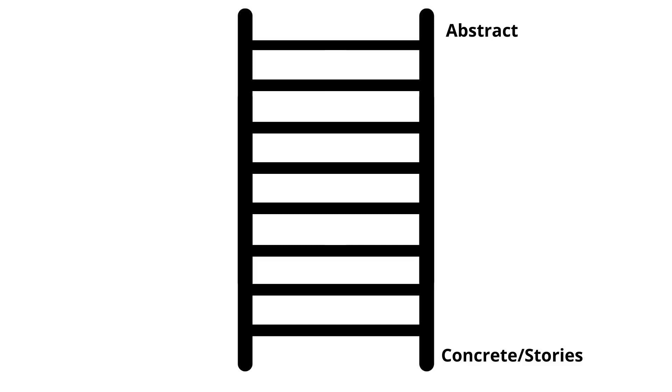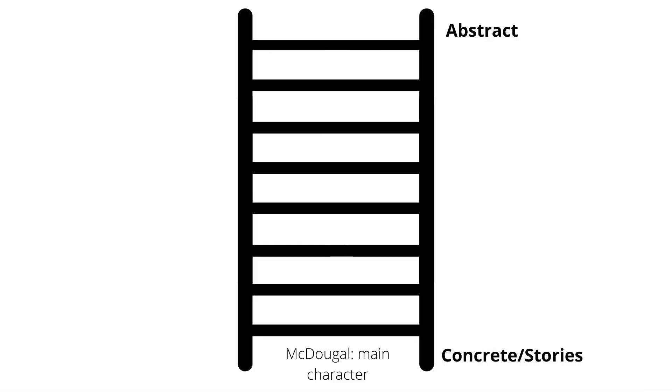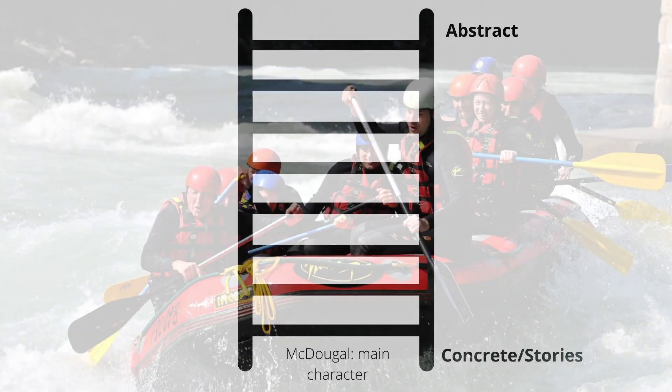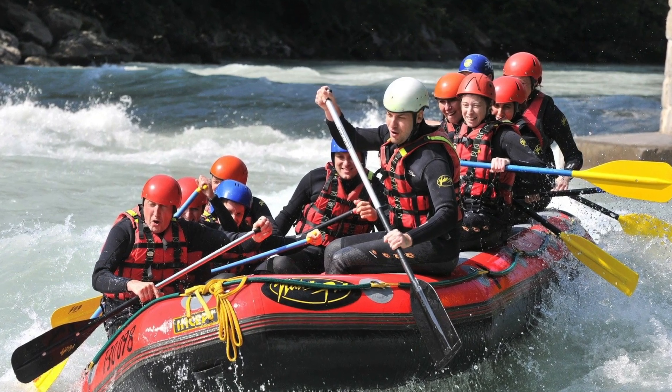To understand this Ladder of Abstraction, let's see it in action. Jack Hart gives us the example of a magazine article that an author is writing about a person called McDougal, who is a river rafter on the Illinois River in Oregon. At the bottom of the ladder is the concrete, detailed, specific storytelling — describing a scene. Jack Hart calls this the scenic narrative, and here we have McDougal as the character of the story. When you're at the bottom of the ladder, you're putting your reader into a scene where they're almost experiencing it as if they were there in person.